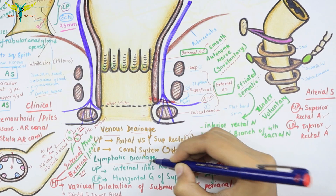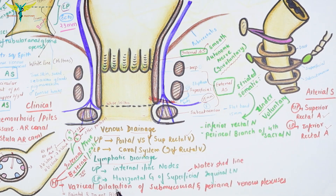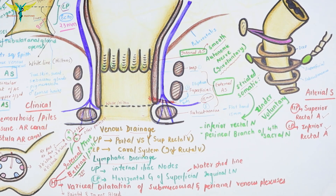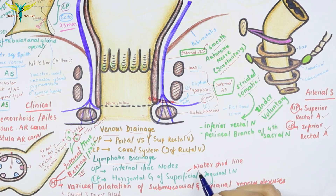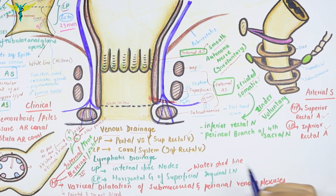For lymphatic drainage, the upper part drains into the internal iliac nodes, whereas the lower part drains into the horizontal group of the superficial inguinal lymph nodes. Because they drain into a different group, the dentate line is also called the watershed line.